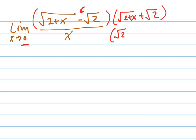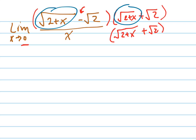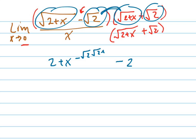Remember, I have to do that on the bottom as well, because I have to multiply the top and bottom by the same thing. The beauty of that is when you multiply these two things together, it's going to square it — in other words, get rid of the square root sign. Same with these two things: it's going to make it minus 2, because the square root of 2 squared is 2. And in the middle, I'm going to have minus the square root of 2 times the square root of 2 plus x, and then plus the square root of 2 times the square root of 2 plus x.